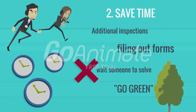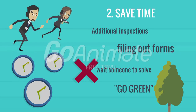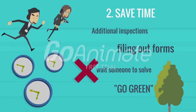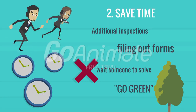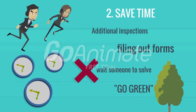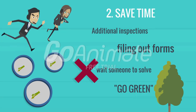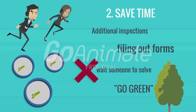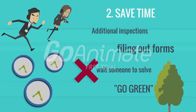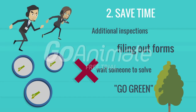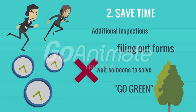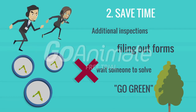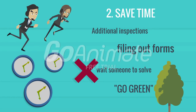Save time. The company will not need to deal with additional inspections, write reports, or fill out forms if they implement environmental cost management, since the main purpose of this management is to comply with the regulations. Furthermore, the company does not need to wait for someone to solve the problem if they are ever charged with a lawsuit. Furthermore, the methods of going green is somewhat of a necessity nowadays, so the company that implements this management will adapt to changes in policies instantly.